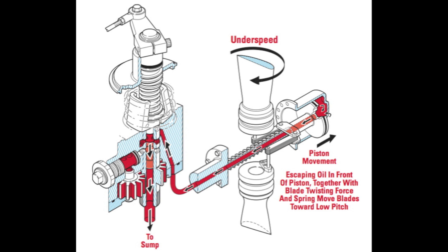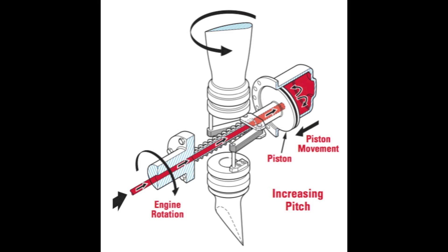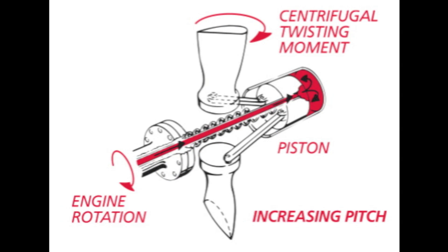The first force is produced by a spring attached to the piston. The spring is designed to push the piston towards the dome and is thus forcing the propeller to a low pitch setting. The second force is caused by the turning propeller. The turning propeller causes a twisting moment of the actual propeller itself, which also moves the piston towards the front of the dome. Therefore, when oil is pumped into the dome, it moves the piston away from the front of the dome, overcoming these two forces — the spring and the centrifugal twisting moment of the turning propeller.